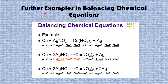Moving along, we have further examples in balancing chemical equations. Here, copper is reacting with silver triadonitrate 5 to give copper triadonitrate 5 and silver. The number of atoms of copper is 1, silver is 1, nitrogen is 1, and oxygen is 3. On the product side, the number of copper is still 1. You can see that there is an imbalance in the number of atoms of nitrogen and oxygen, which is why it is underlined — it does not correspond with the number of nitrogen and oxygen on the product side.